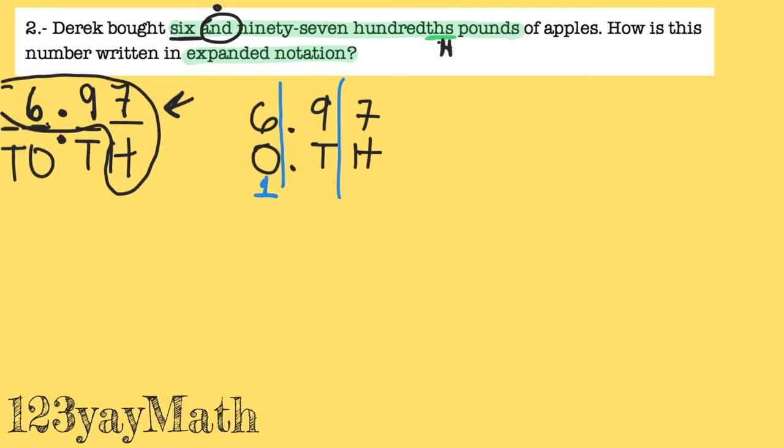Let's write the place value. These are six ones. These are nine tenths. The tenths are 0.1. And these are the hundredths, 0.01.